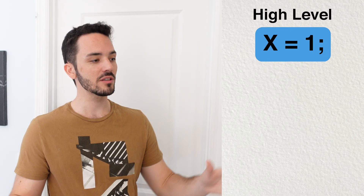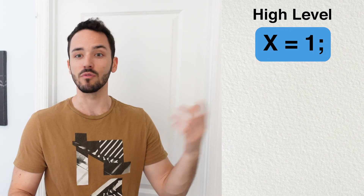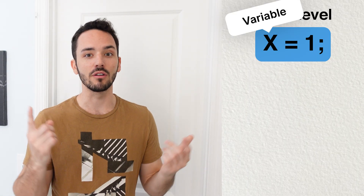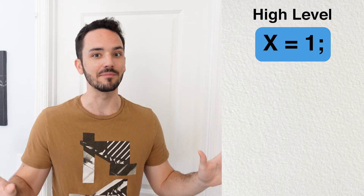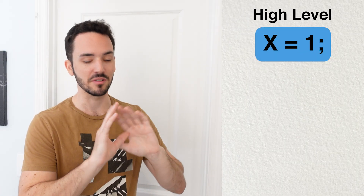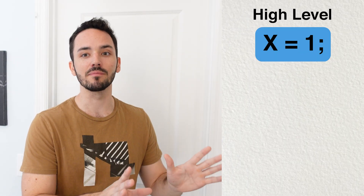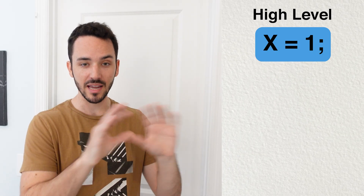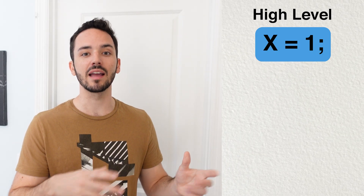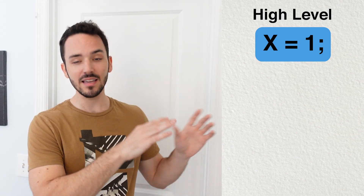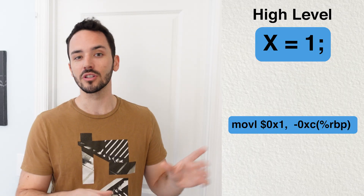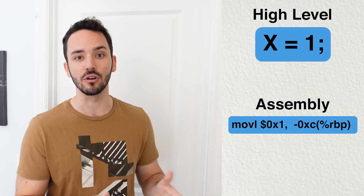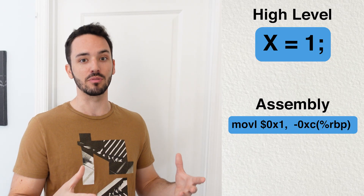It's a very simple line of code. All it's saying is we have a variable, we named it x, and we want to set it to a value of one — just a static value of one, nothing else in the program. Now the compiler will take this line of code and convert it to assembly, and this is the actual conversion of x equals one in C into the assembly code you'll see in the computer.